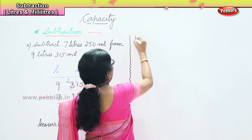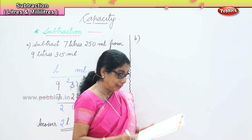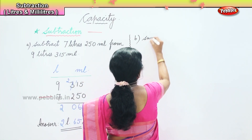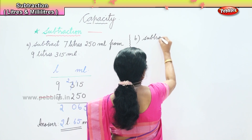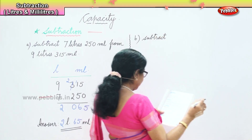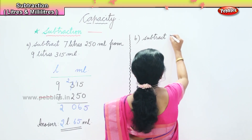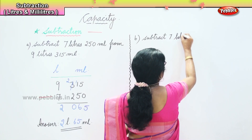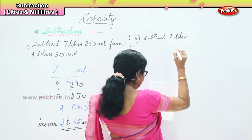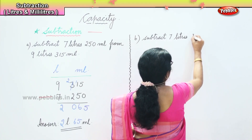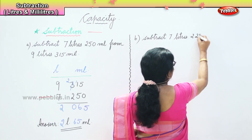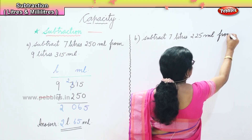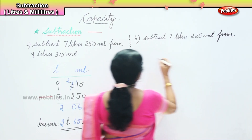We will do one more sum to help us understand. Subtract 7 liters 225 milliliters...